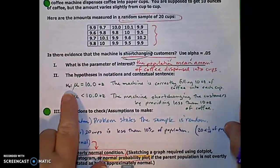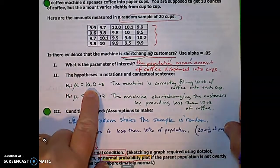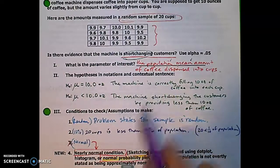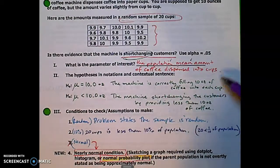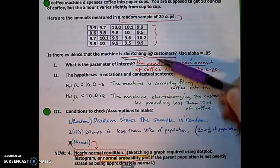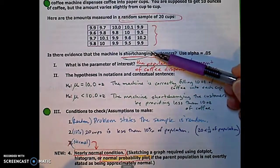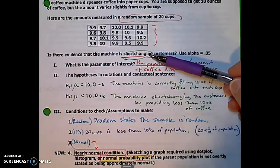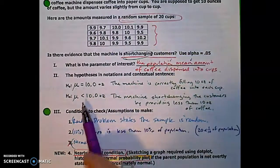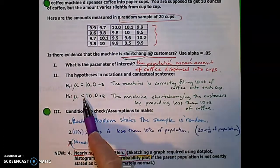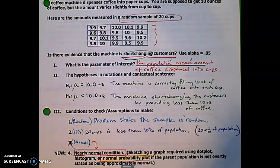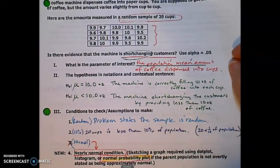So what we're going to look at, the null hypothesis is that the mean μ is actually equal to 10 ounces or in a contextual sentence the machine is correctly filling 10 ounces of coffee into each cup. And then the alternative is that we're considering that we're getting short changed. It seems like there's less than 10 ounces of coffee in each cup. So we do want to do a one-sided test. We are thinking that the mean is actually less than 10 ounces of coffee. Or in words, the machine is short changing the customers by providing less than 10 ounces.